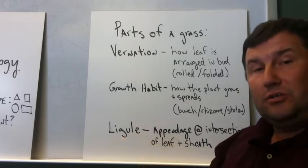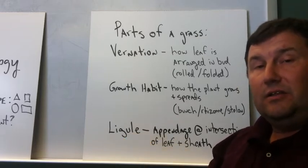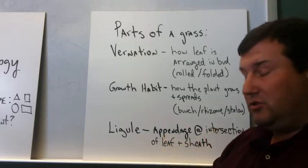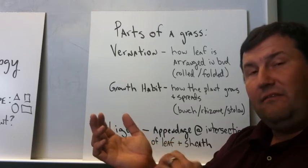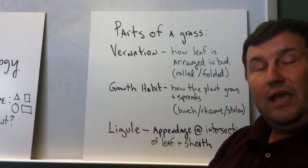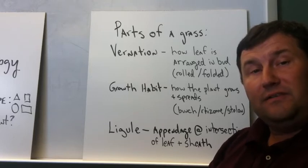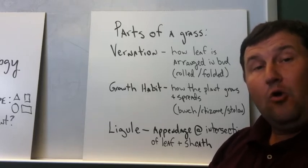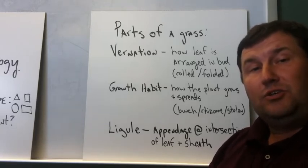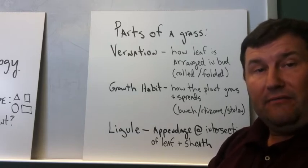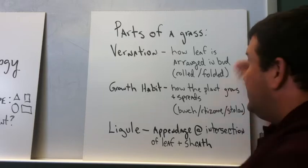The ligule is a third structure that's critically important in being able to identify turf grasses. The ligule is basically an appendage at the intersection of the leaf and sheath, so it occurs right at the base of the leaf where it emerges from the sheath, and the presence or absence of this appendage and the appearance of this appendage, whether it's hairy or membranous, determines which grass species we're dealing with, and it's an important characteristic for being able to identify a particular turf grass.